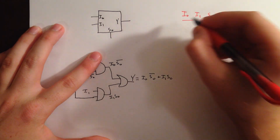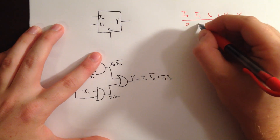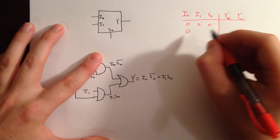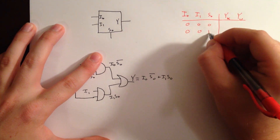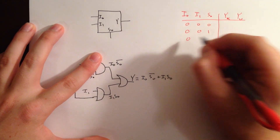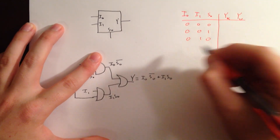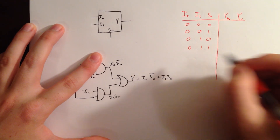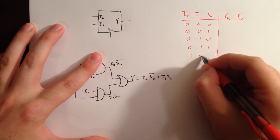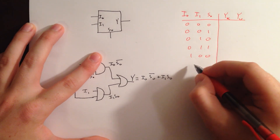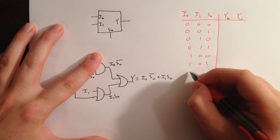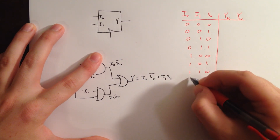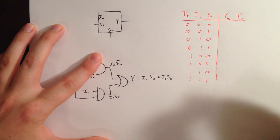So let's go ahead and build our truth table for all the possible values of our inputs. The rows will cover: 0,0,0 — 0,1,0 — 0,0,1 — 0,1,1 — 1,0,0 — 1,1,0 — 1,0,1 — and 1,1,1.